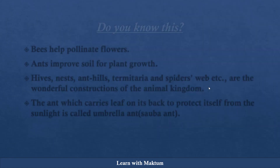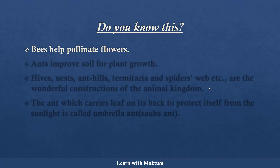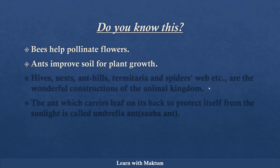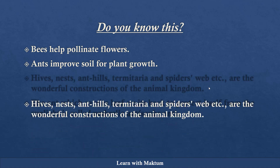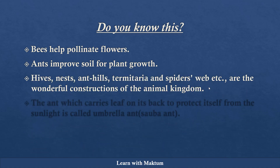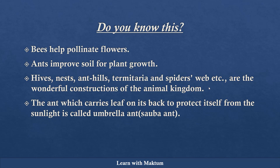There are some points given in the textbook that you should remember. Bees help pollinate the flower — there is a word called pollinate, which you will learn about in higher classes, but for now just remember this word. Ants improve the soil quality for plant growth. Hives, nests, ant hills, termitaria, and spider webs are all called wonderful constructions of the animal kingdom. The ant which carries a leaf on its back to protect itself from sunlight — those ants are called umbrella ants or sawba ants.